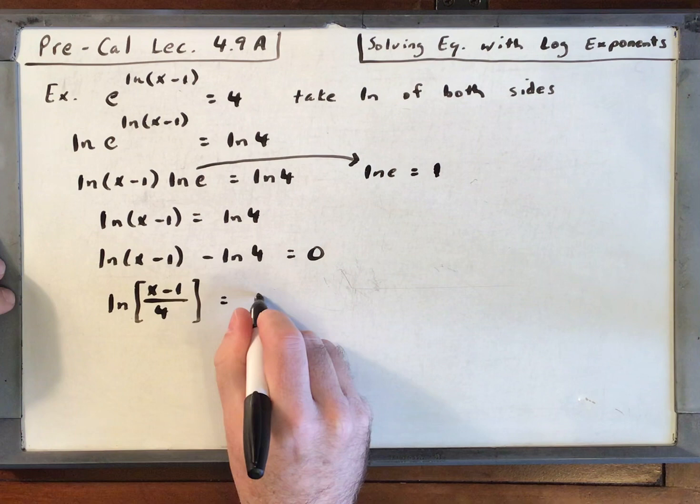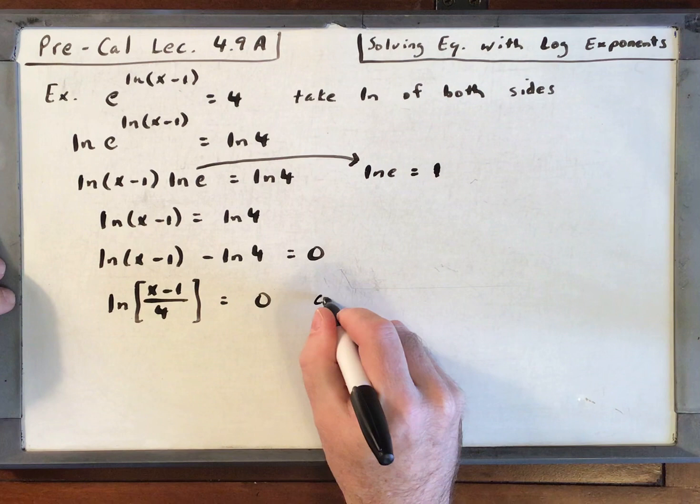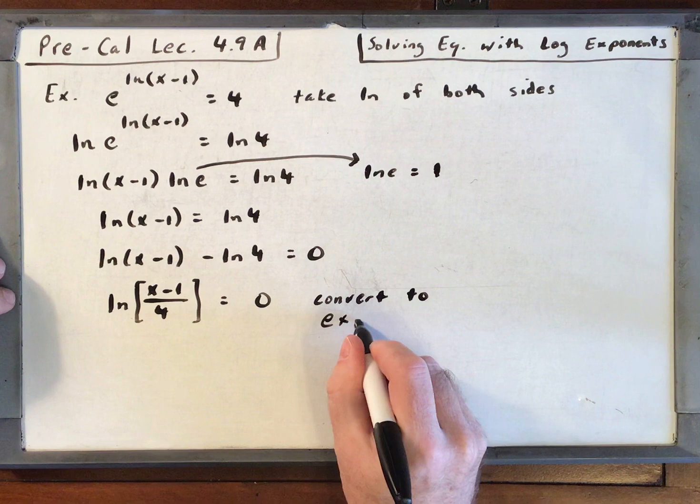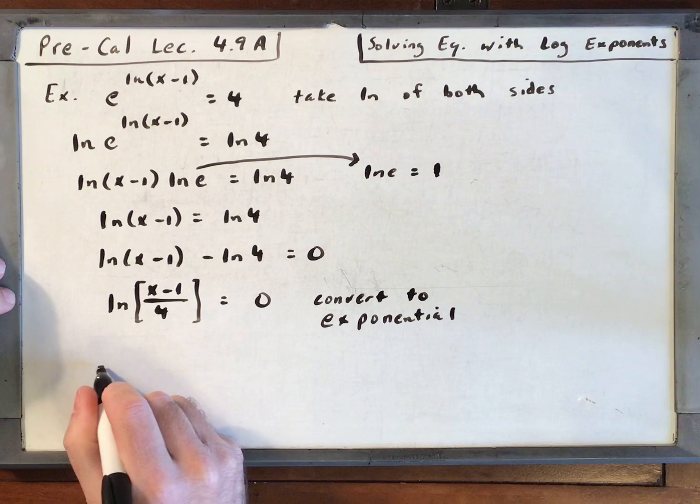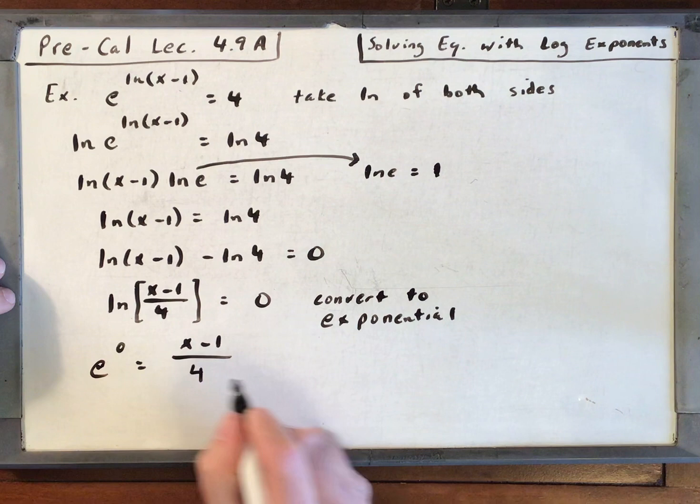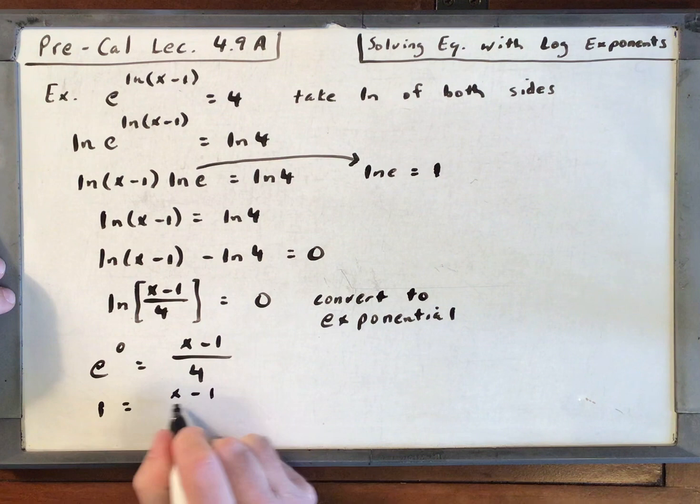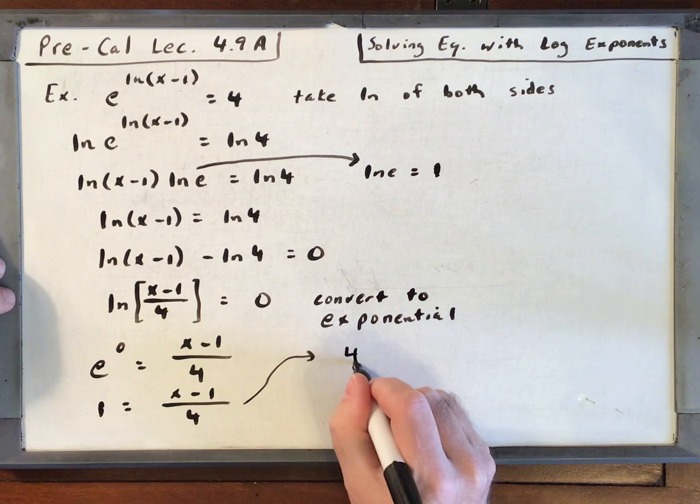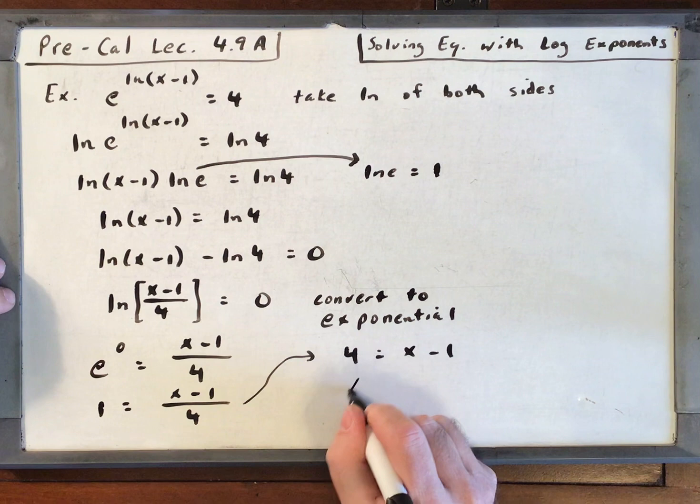Natural log is log base e. Let's convert to an exponential. So I have e to the 0 is equal to x minus 1 over 4. What is e to the 0? It's 1. If we multiply both sides by 4, I have 4 is equal to x minus 1, and x is equal to 5.